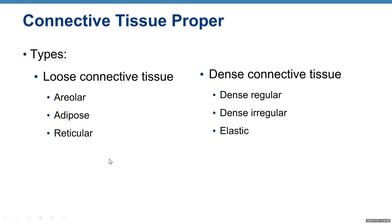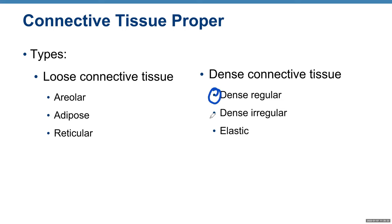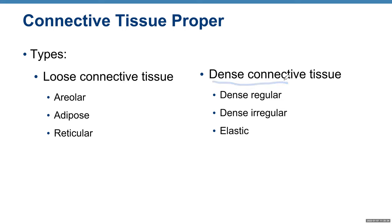Connective tissue proper includes loose connective tissue and dense connective tissue. Examples of loose connective tissue are areolar, adipose, and reticular. Examples of dense connective tissue are dense regular, dense irregular, and elastic. Loose means the fibers in the matrix are loosely arranged; dense means the fibers in the matrix are densely packed.